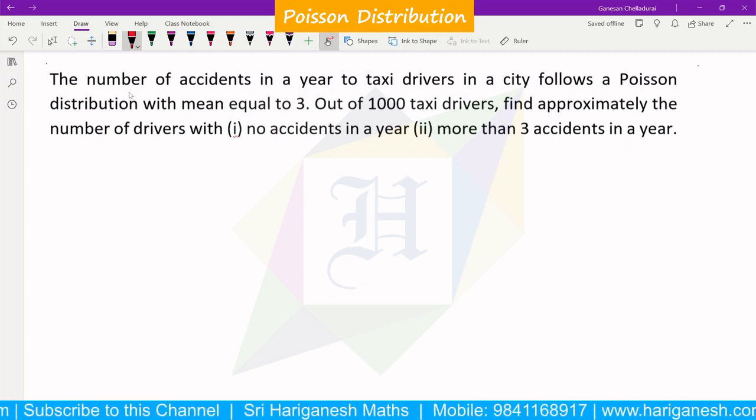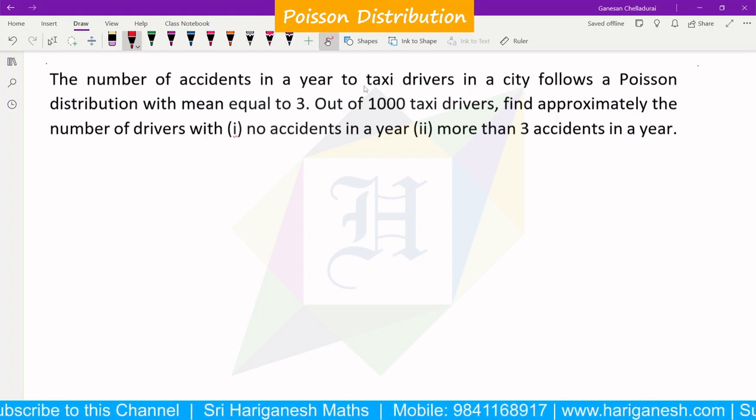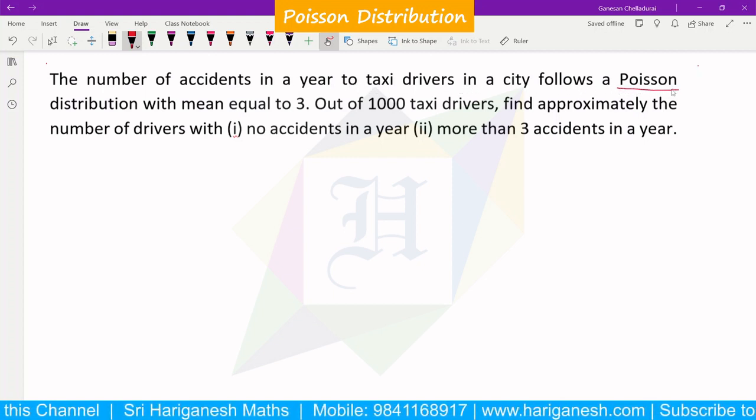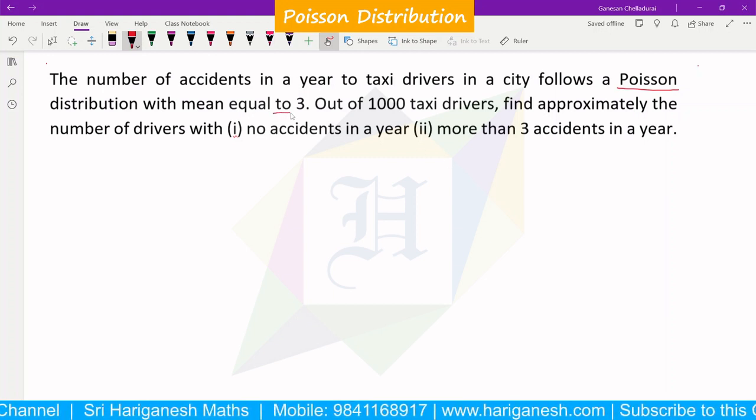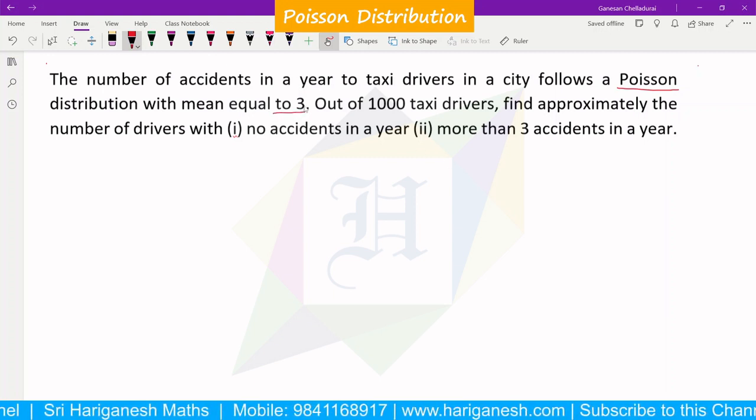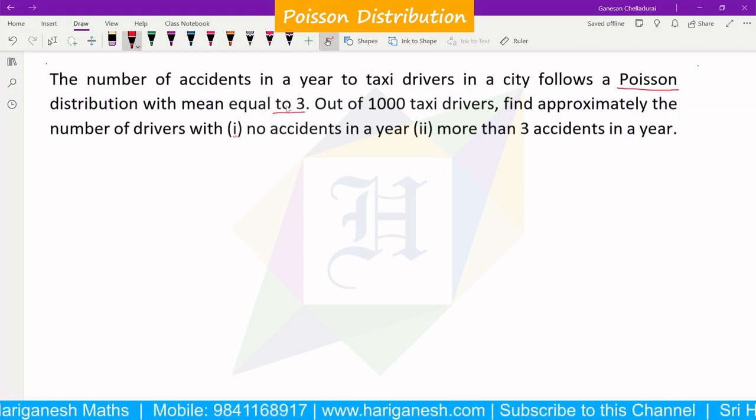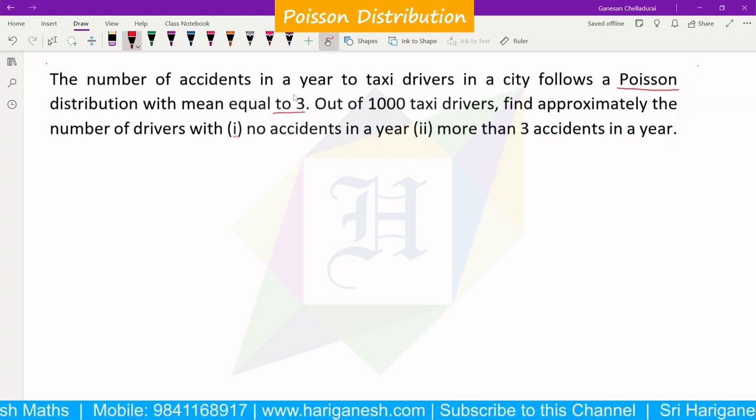So in the Poisson distribution, the number of accidents in a year to taxi drivers in a city follows Poisson distribution with mean equal to 3. So lambda value. I already told you in the introduction video, Poisson distribution mean is lambda. So lambda equals 3.